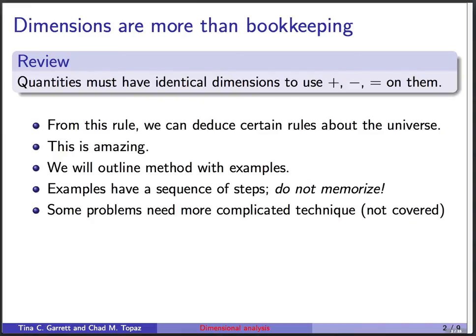So we have this fact from our basic facts about dimensions that quantities have to have identical dimensions if you're going to add, subtract, or compare them. From this rule it turns out we can deduce things about the universe, non-trivial things that are going to be kind of amazing actually, that you can get this kind of information just out of knowing dimensions.